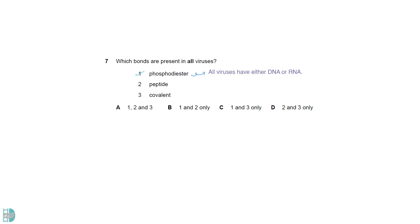All viruses have either DNA or RNA, so they must contain phosphodiester bonds. Capsid, or protein coat, is a common feature of all viruses. Peptide bonds join the amino acids together. Both phosphodiester and peptide bonds are covalent bonds, so three is correct as well.